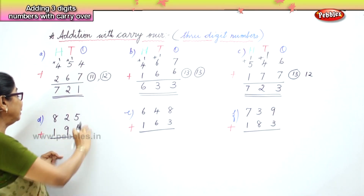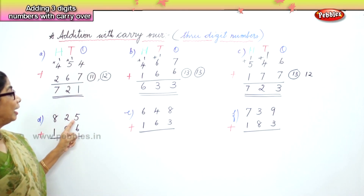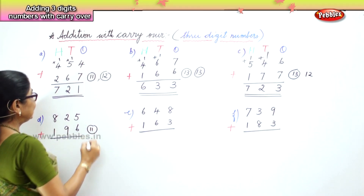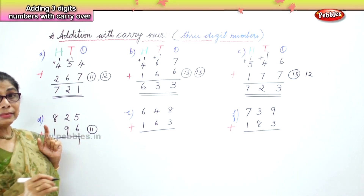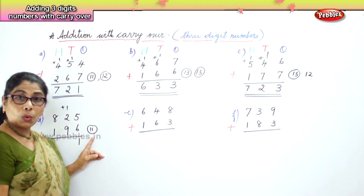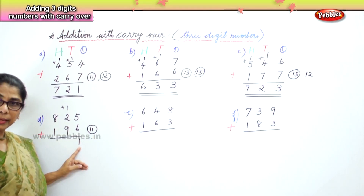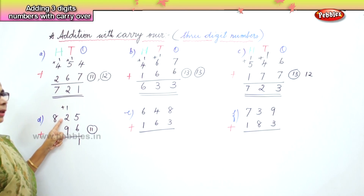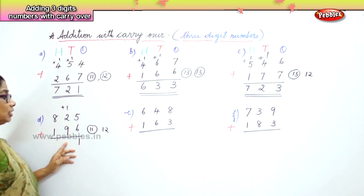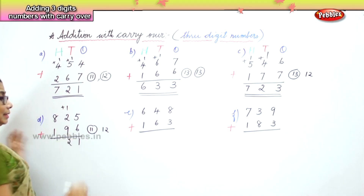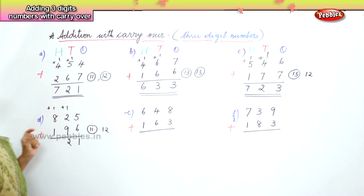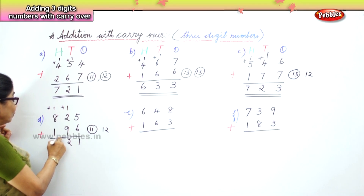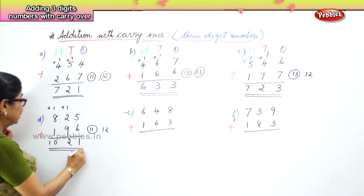Next sum: 825 plus 196. In the ones place: 5 ones and 6 ones. 5 plus 6 is 11 — that is 1 one and 1 ten carried over. In the tens place: 9 tens plus 2 tens plus 1 carried ten is 12 tens — put 2 in the tens place, carry 1 to hundreds. Now 800 plus 100 plus 100 carried is 1000. So the answer is 1021.